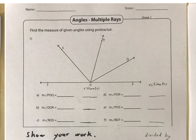Let's do some practicing angles again, but now instead of just one angle, we've got a whole bunch of rays coming out. We're calling this multiple rays, and we need to use the letters to figure out which one is which.